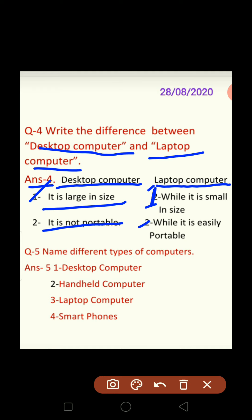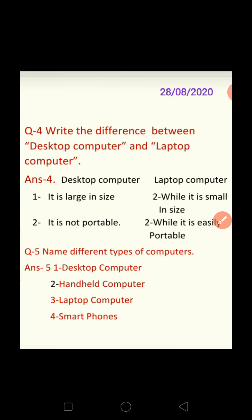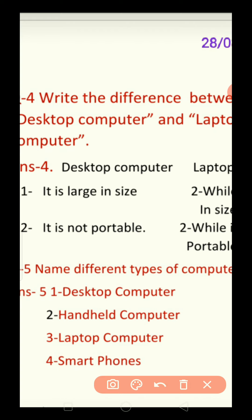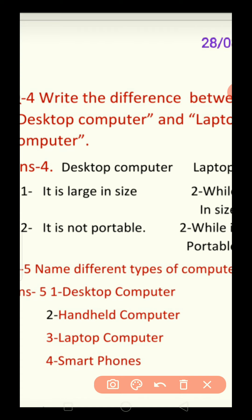I hope you understand answer number four. Question number five: name different types of computers. According to your book, the types are: first, desktop computer; second, handheld computer; third, laptop computer; and fourth, smartphones.